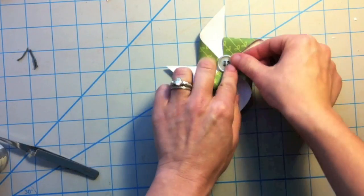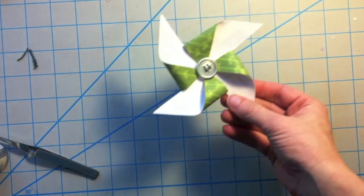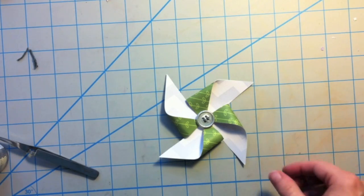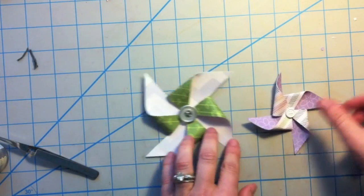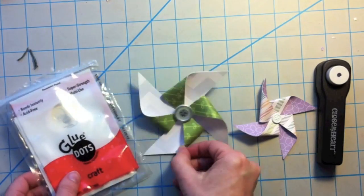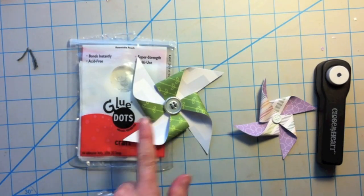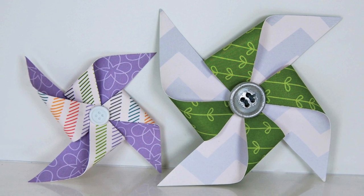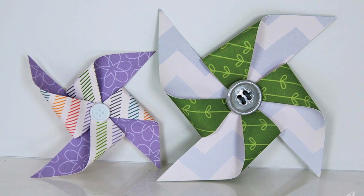You can use glue dots. You can use glossy accents or whatever adhesive you have to keep whatever centerpiece you want to use for that pinwheel in place. So there you have it. You've got two techniques. The one to the right used the hole punch and the one to the left used the glue dots. I'm definitely a glue dots pinwheel kind of gal. So thank you guys so much for watching and thank you Simon Says Stamp for having me. Have a great day. Bye.